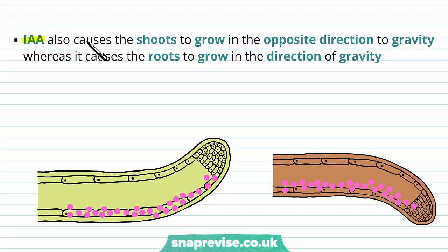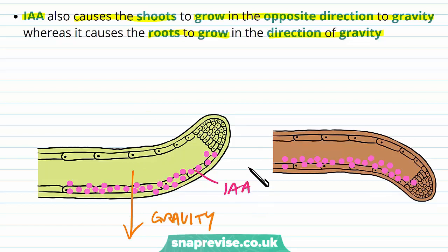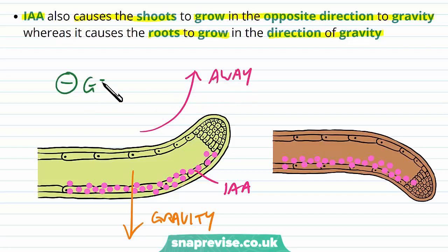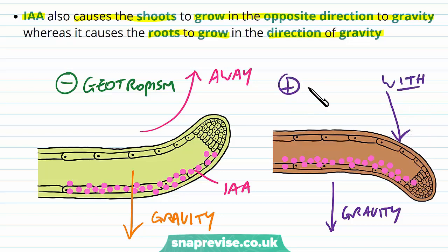The indole acetic acid is also able to cause the shoots to grow in the opposite direction to gravity, whereas it causes the roots to grow in the direction of gravity. So we have the same chemical but a different stimulus. Gravity is pulling down, and the IAA molecules cause shoots to grow away from gravity — negative geotropism — and the roots to grow with the direction of gravity, which is positive geotropism.